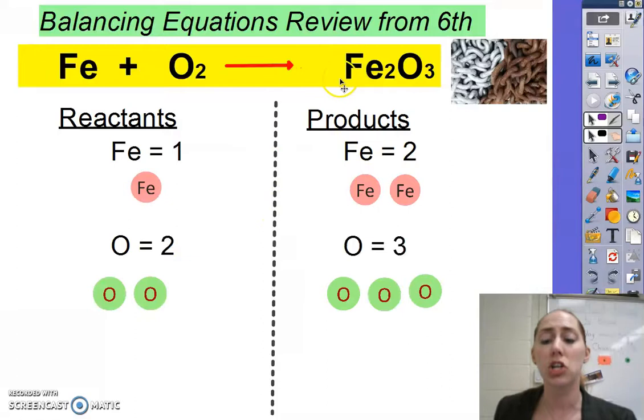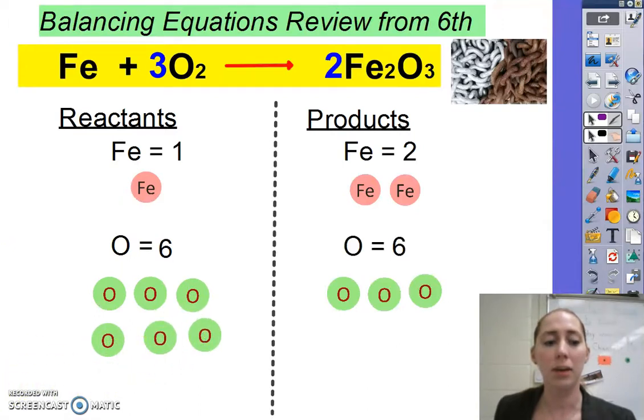So we have to change this by changing our coefficients. You cannot change your subscripts, but you can add molecules. Let's balance our oxygens first. If I were to put a two coefficient up here, then I would have two times three, which would give me six oxygen molecules. And then if I put a three over here, three times two would give me also six. So that would mean that now I have six oxygens on my reactant side and six oxygens on my product side. So my oxygens are happy.